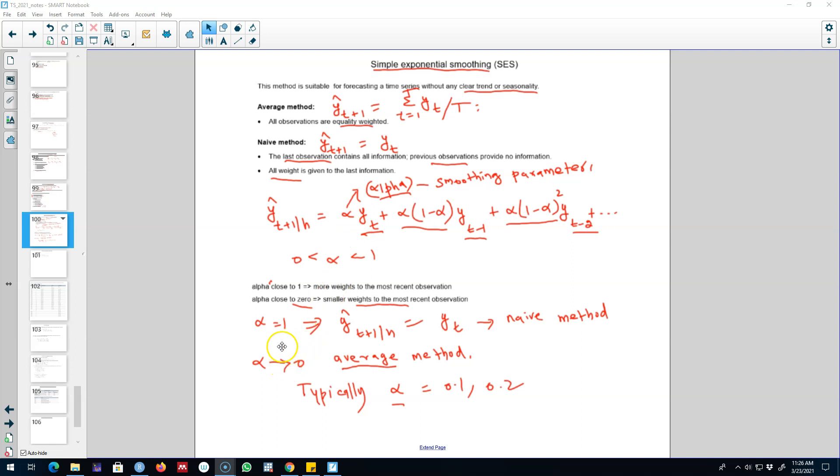In the previous video I said that if alpha is closer to 1, then we assign more weight to the most recent observations and the weights decay very rapidly.